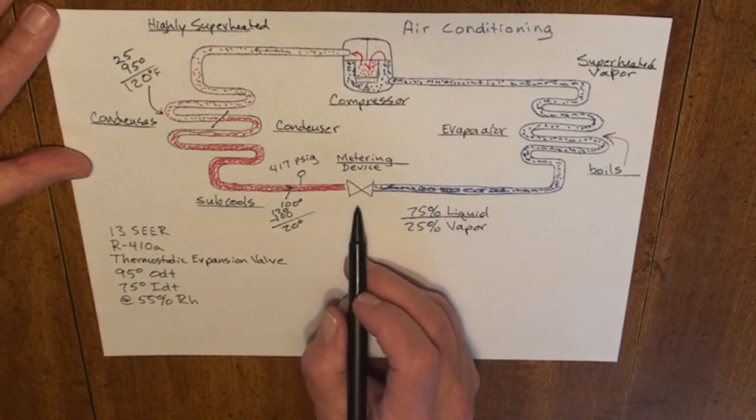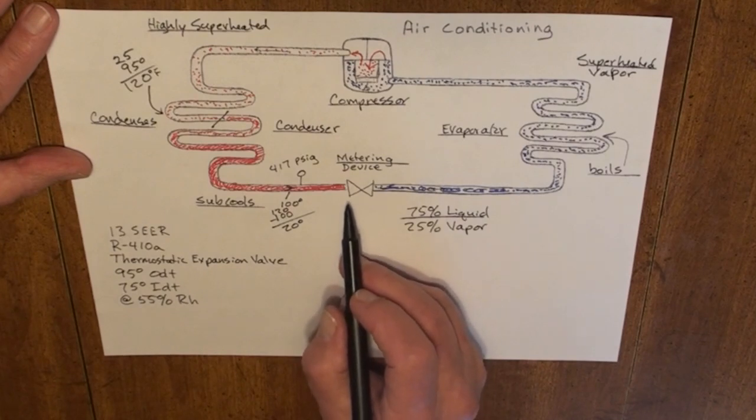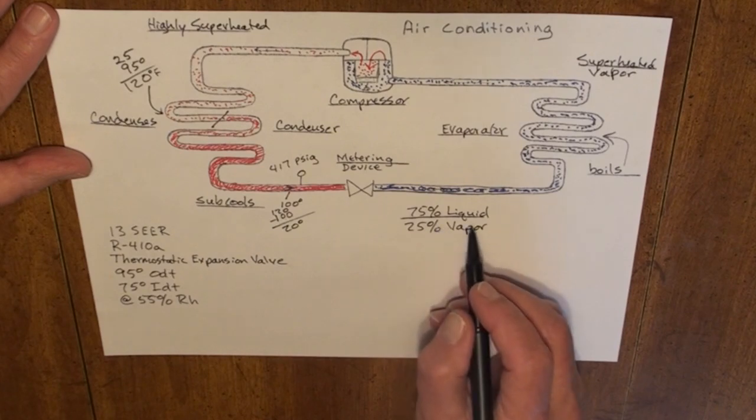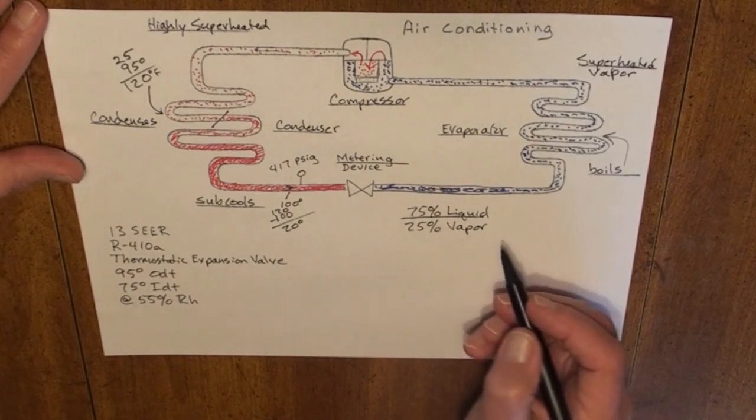At 100 degrees, pure liquid enters my metering device, leaves as a 75% liquid, 25% vapor.